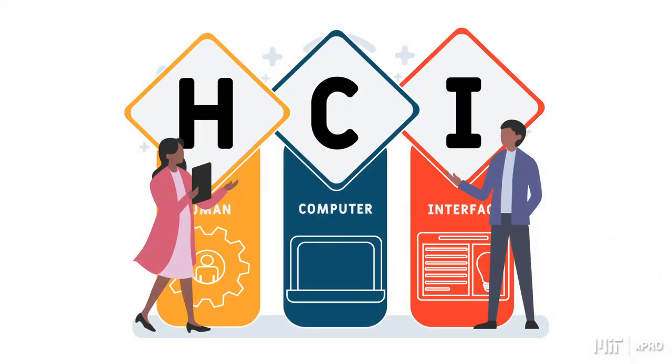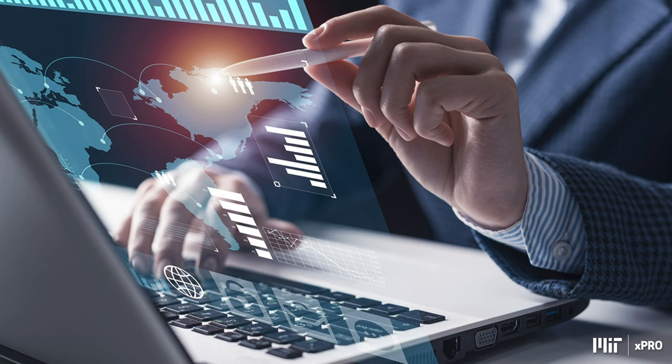After looking at HCI, Professor Tom Malone will present a different use of AI — one where humans and computers combine efforts to act in ways that seem intelligent. He will introduce the concept of superminds. Another type of IP and AI choice that we will look at, last but not least, is how AI can impact manufacturing and robotics.